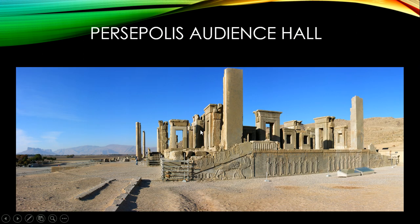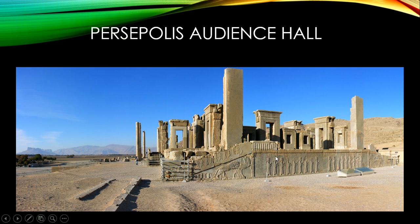Here's Persepolis, the audience hall of the King of Persia. You can see a little person there to get a sense of the scale — it's a really intimidating structure. Interestingly, it mixes different architectural styles from areas Persia conquered: art that looks like Mesopotamian art, but arches that look like Egyptian architecture. Persia was good at incorporating the culture of conquered peoples, which made them more unified and stable through toleration.